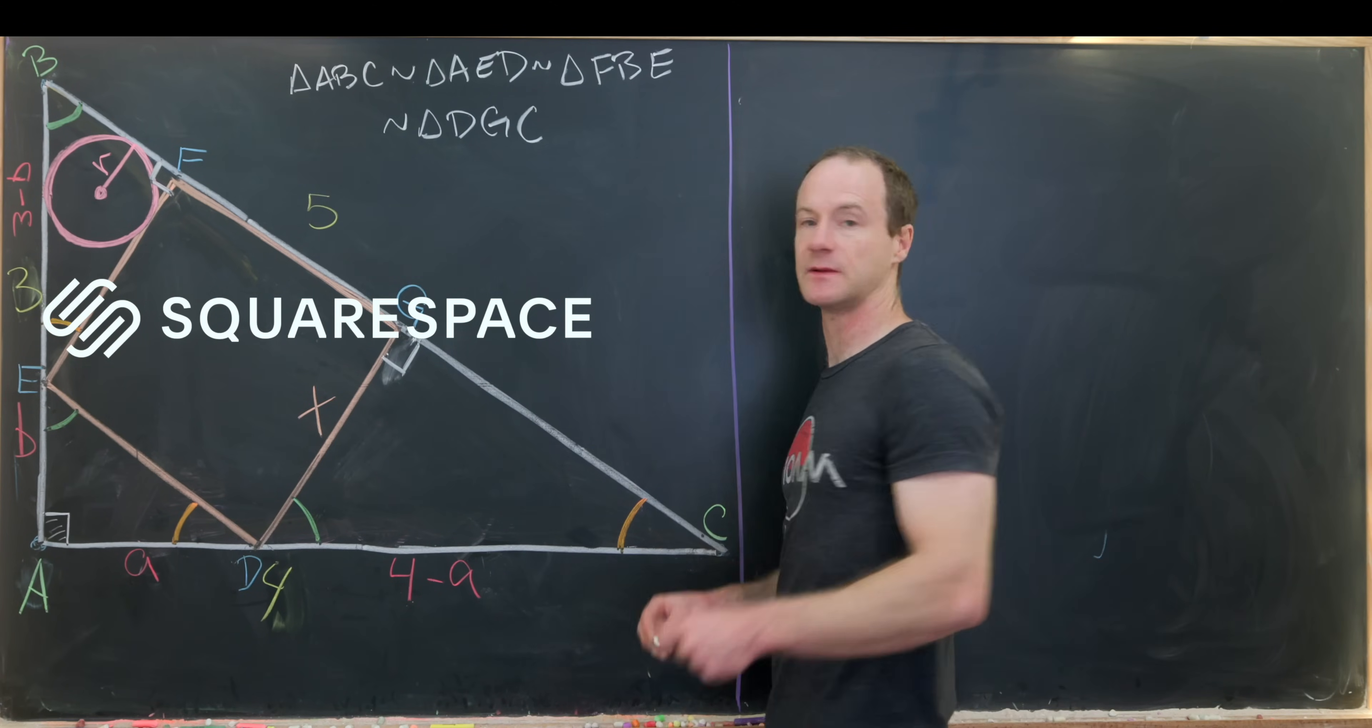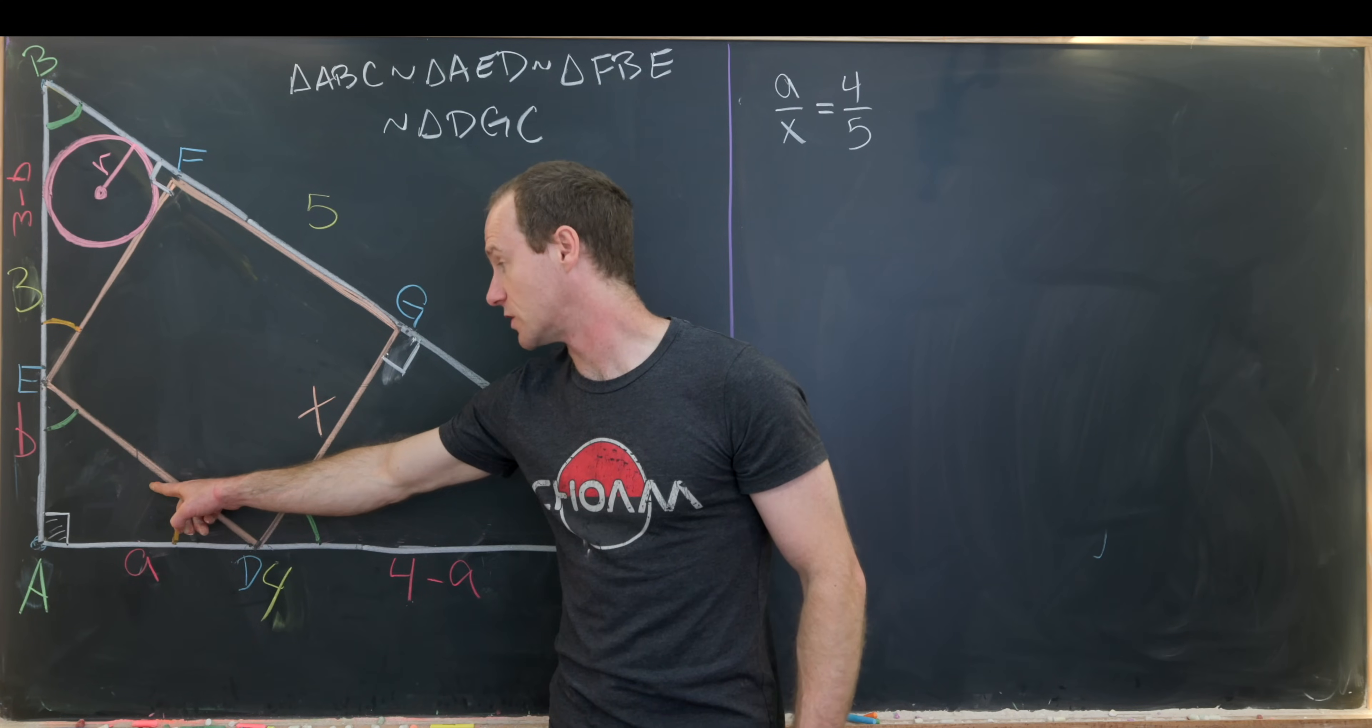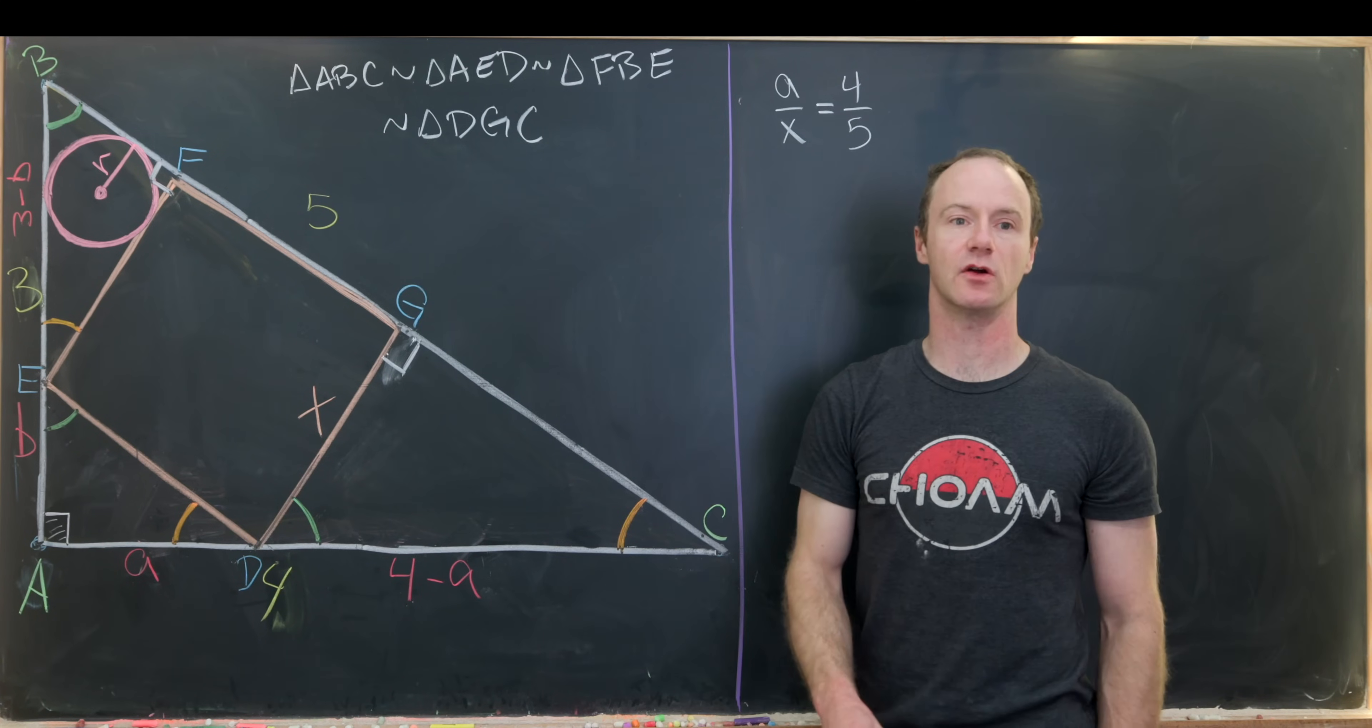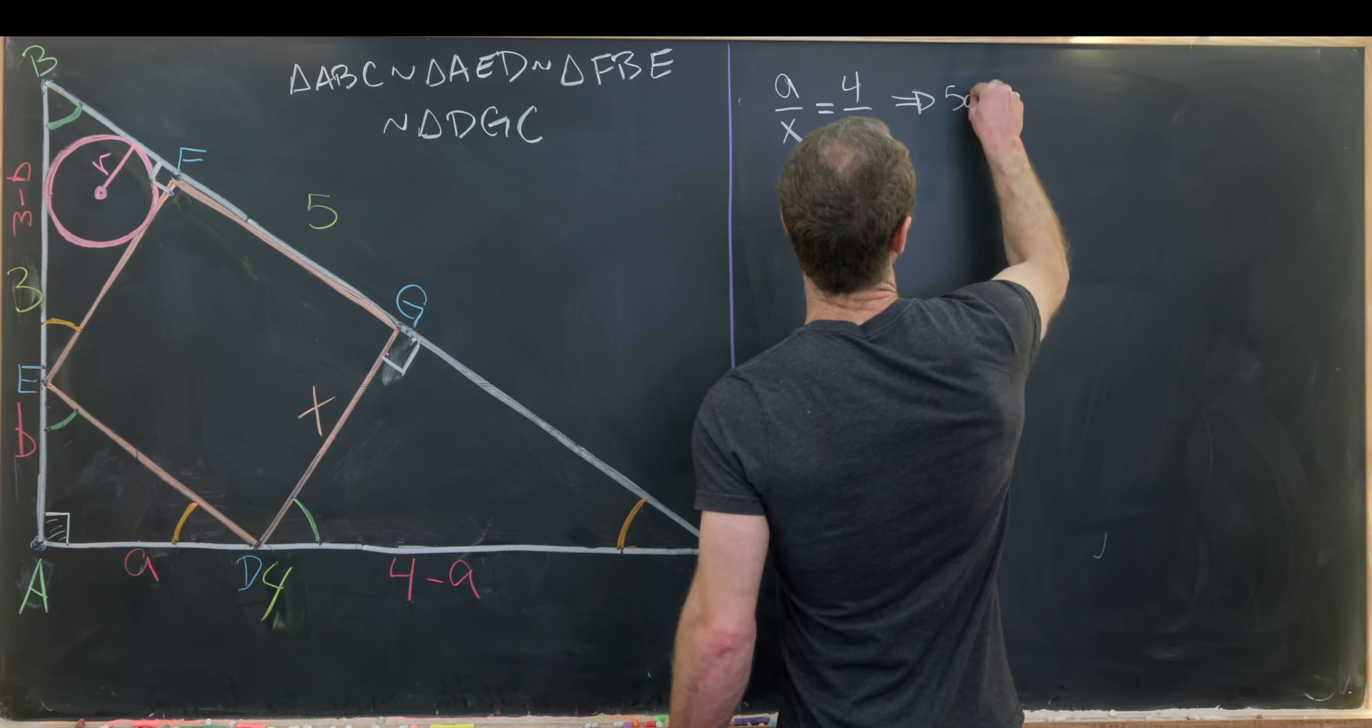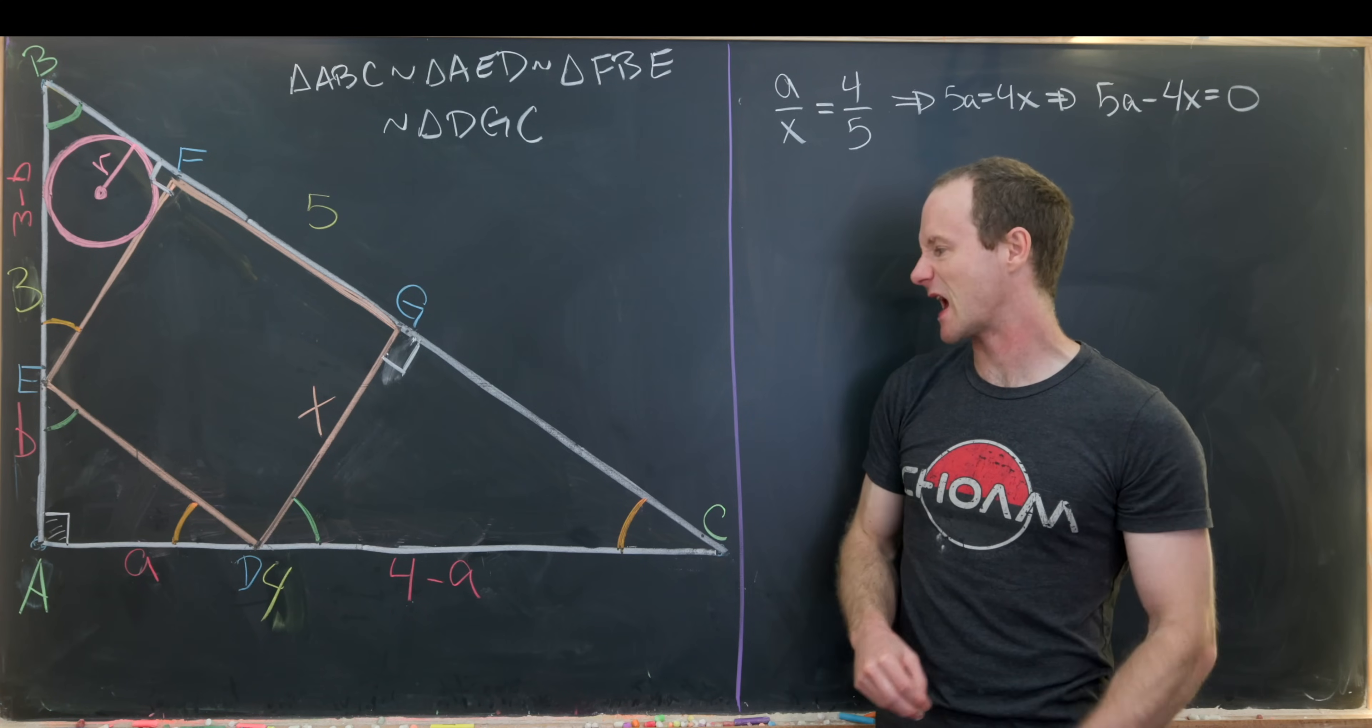So let's see the first thing that we can see. First up, we see that a divided by x is the same thing as 4 divided by 5. So why is that? Well, notice that this length down here is also x. And so we're dividing this side of the triangle by the hypotenuse. But that's the same thing as dividing 4 by the hypotenuse of the whole triangle, which is 5. But that gives us an equation relating a and x pretty quickly. It gives us 5a equals 4x, or we could write it as 5a minus 4x equals 0.